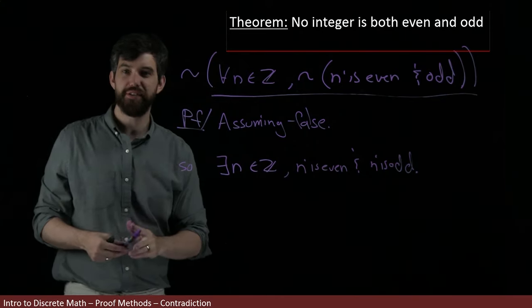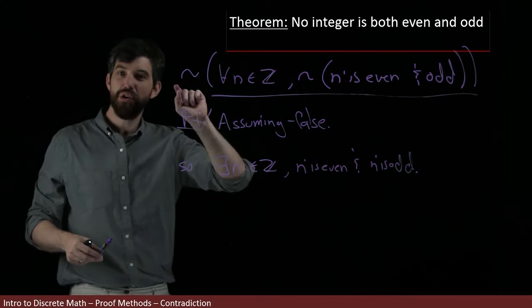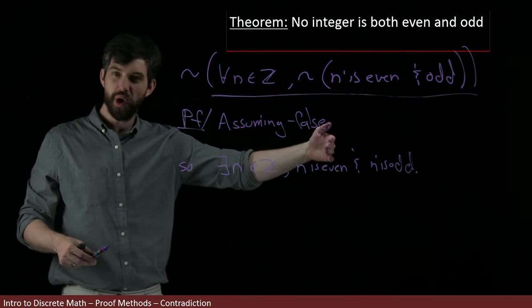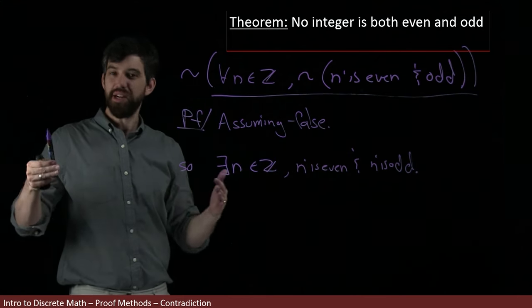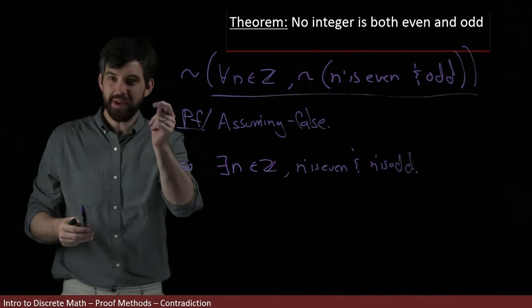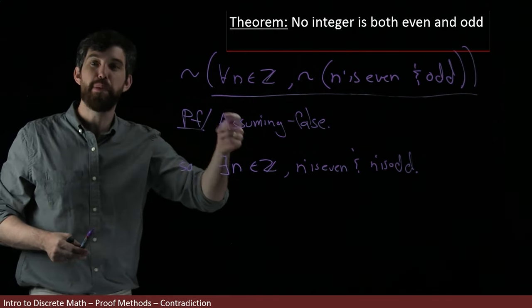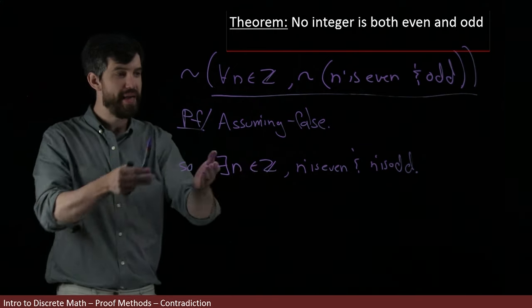So the way to think about this is if my original statement is no integer is both even and odd, then if I'm going to assume that that thing is false, it says, well, there has to be at least one that is both even and odd. And that's my claim here.